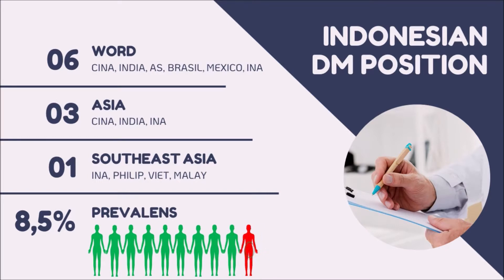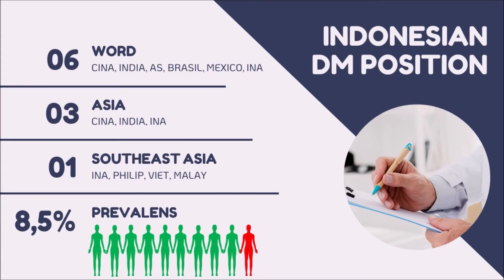Diabetes prevalence has been rising more rapidly, especially in Indonesia. In 1990, Indonesia became the world's sixth most diabetes-populated country, Asia's third most, and Southeast Asia's first most diabetes-populated country. Indonesia has a prevalence rate of 8.5%, meaning every 10 people, there is one who has diabetes. During the pandemic, diabetes cases in Indonesia increased from 6.2% to 8.5%. So, how do we respond and provide practical solutions to reduce the prevalence rate?